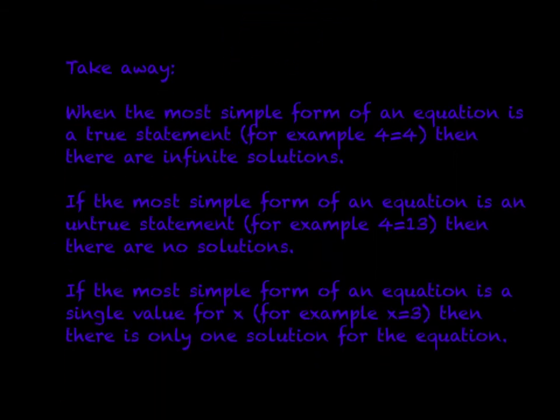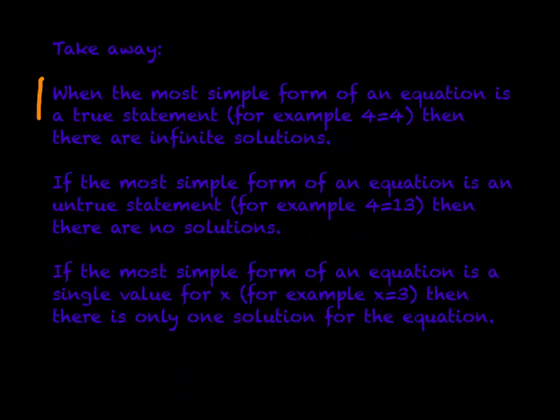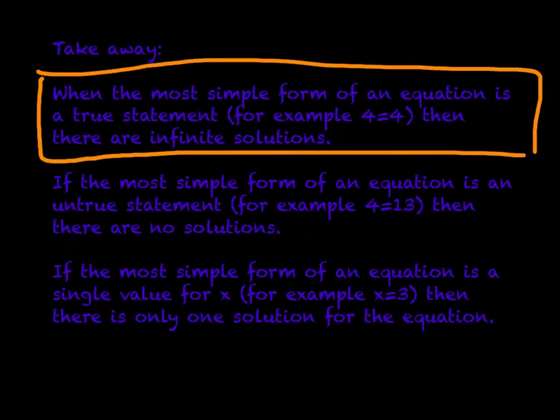So our takeaway from this, and this is what should be written down in your notes after you finish this part of the investigation, I believe it's question C. When the most simple form of an equation is a true statement, for example, 4 is equal to 4, or for our situation, it said 4x is equal to 4x, then there are an infinite number of solutions. In other words, we had so many different forms of x that x could actually be taken out of the equation because you'd say 4x minus 4x is equal to 0. So essentially, 4x is equal to 4x. We'd subtract 4x from both sides, we get 0 is equal to 0. So therefore, there's an infinite number of solutions. 0 is always equal to 0. Therefore, we have the same line.